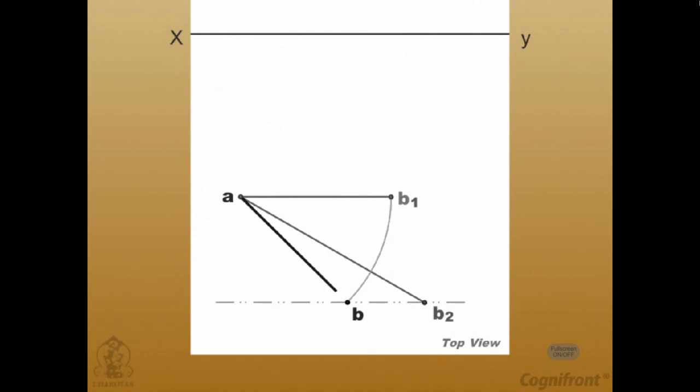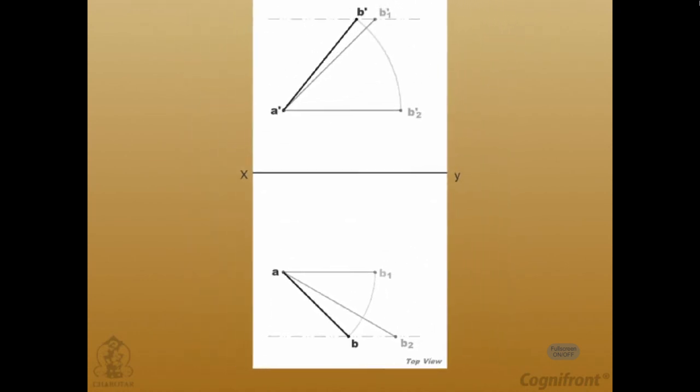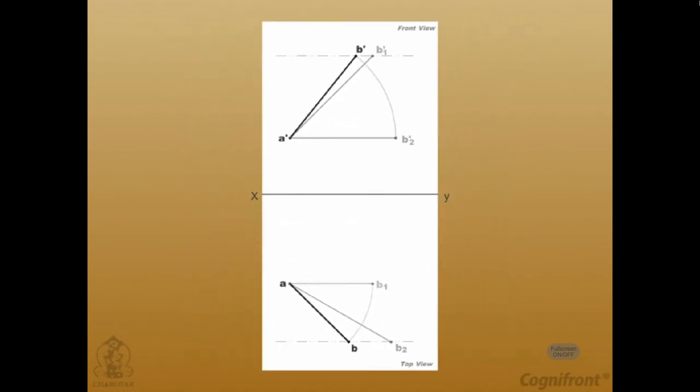The line AB will be the top view of the given line. Well, this completes the discussion about the projections of the straight line.